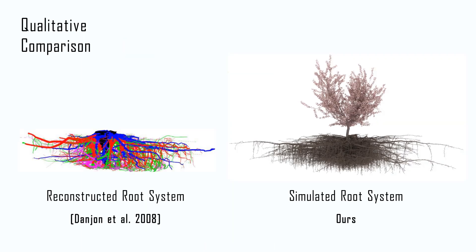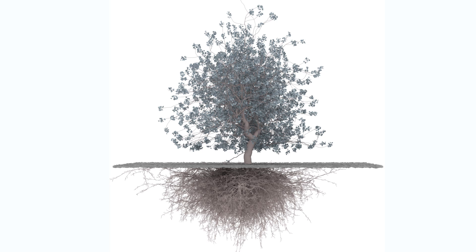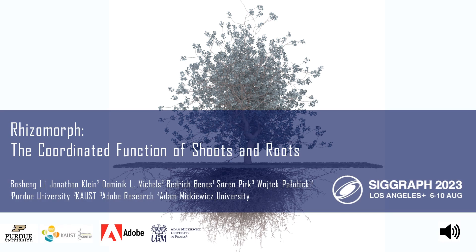Here we show a comparison between a real root reconstruction to the left and an example simulated root architecture to the right. Our method captures the essential features of real root systems such as sinker, lateral, and tap roots. By introducing a coordinated development of shoots and roots, Rhizomorph enables a new way of modeling tree form.